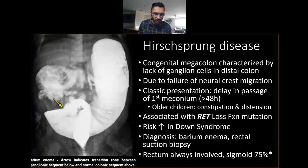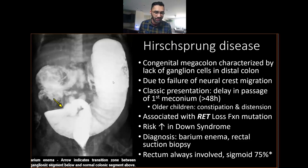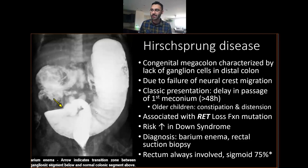Diagnosis is by barium enema — you shoot barium and visualize what the structures look like. As you can see, this is why they call it megacolon — the colon is much larger than it should be. You have a transition zone where you can clearly tell the rectum and sigmoid are not dilated on one side compared to the massively dilated proximal colon.